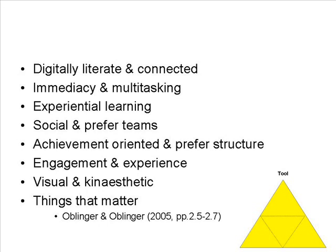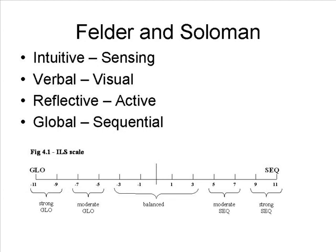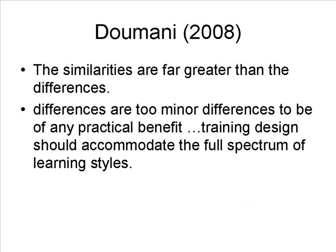What evidence does exist seems to contradict universal claims about the nature of Gen Y as a justification for wholesale changes in the education system. Using the Solomon and Felder learning style inventory and interviews, Dimani compared the learning styles of Baby Boomers, Gen X and Gen Y employees in a banking environment. He found that there were no large differences in learning style preferences across the generations — the similarities outweighed the differences, and differences were too minor to be of any practical benefit in the design of training. Even if Gen Y do have preferred learning styles different to previous generations, it does not necessarily follow that they will prefer different delivery approaches.